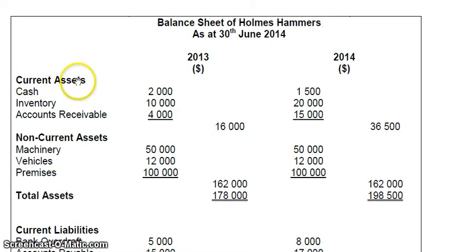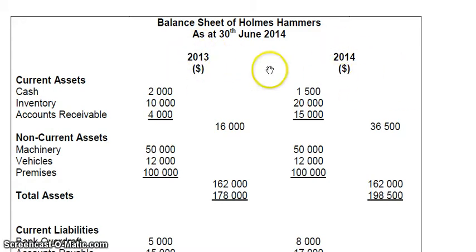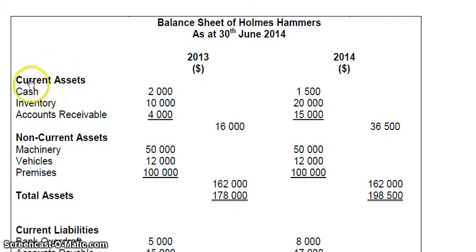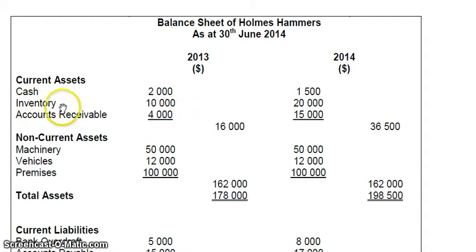There are two different categories of assets: current and non-current. We also have two years side by side — 2013 and 2014 — so we can compare historically what's been happening inside this business. A current asset is any asset the business intends to keep for less than 12 months — things they want to be able to turn into cash within 12 months. Cash is already liquid. Inventory — that's your stock — you want to turn that back into cash as quickly as possible. And accounts receivable is money that's owed to you, which you want back as cash quickly.